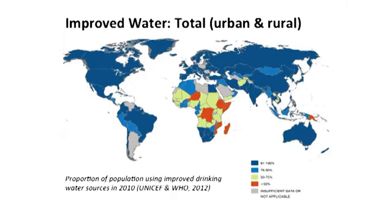This first map shows water services around the world for both urban and rural areas. The orange and yellow colors show poor coverage. Many countries in sub-Saharan Africa stand out as having poor water coverage. Countries in light blue also have large numbers of households with improved water supplies, including Peru and Bolivia in Latin America, and Nepal, Cambodia, and Indonesia in Asia. Note that India and China actually have high coverage of improved water services. Since these are countries with very large populations, we need to pay particular attention to high-population countries such as China, India, Indonesia, Pakistan, and Nigeria.